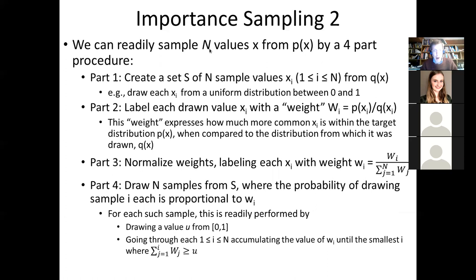Here's the four-step procedure. Suppose we want to draw N values from a distribution P of X — these samples are called particles in particle filtering. First, we create a set of N sample values from the proposal distribution Q of X, something convenient to sample from, like a uniform or normal distribution. We draw from what we have — the proposal distribution Q of X.